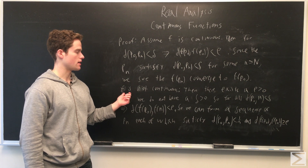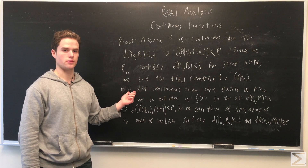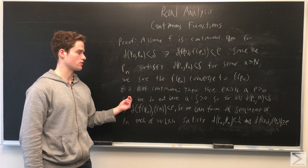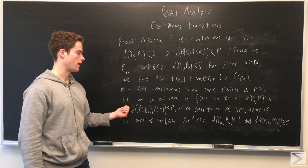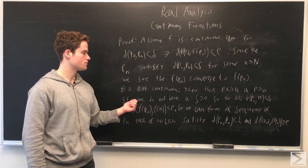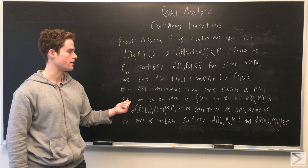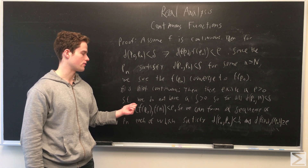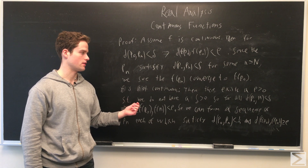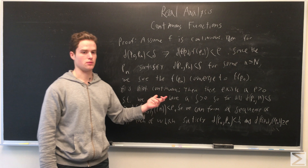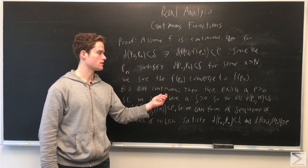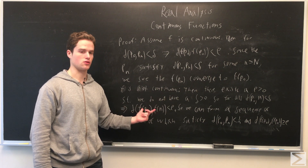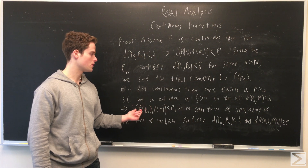If F is not continuous, that means there is some epsilon greater than zero for which we cannot find a delta greater than zero such that when the distance between P0 and N is less than delta, it implies the distance between F of P0 and F of N is less than epsilon. So we can always find some N for which the distance is less than delta, but the image condition fails — it will be greater than or equal to epsilon.